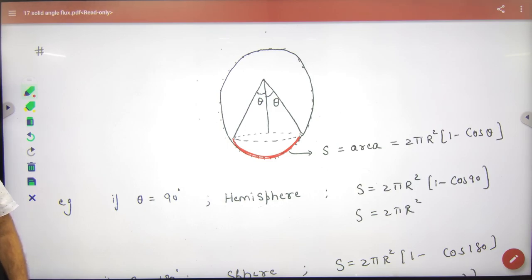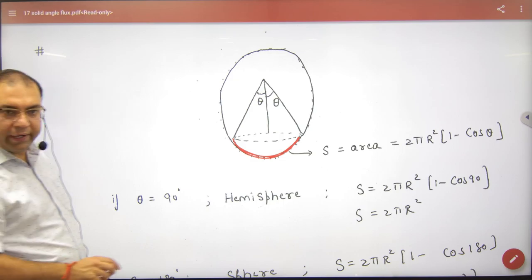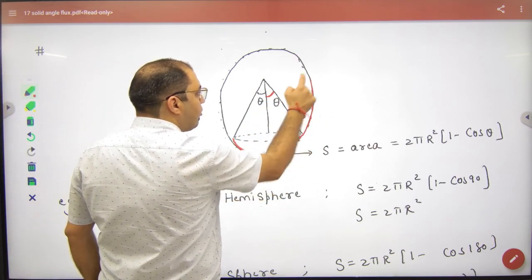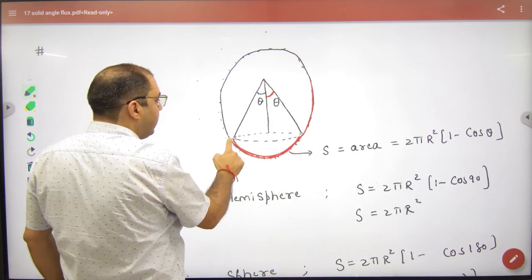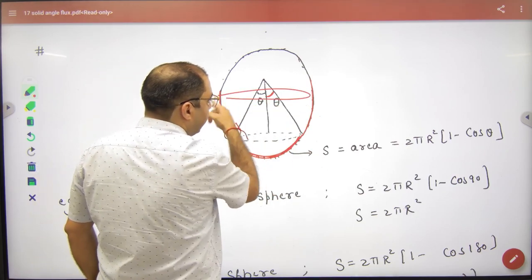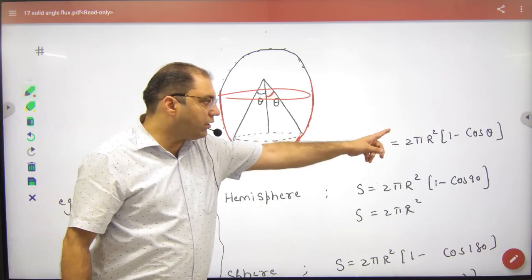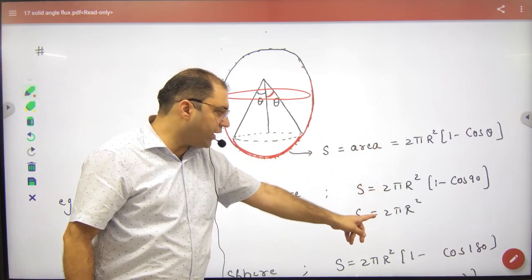For example, if θ is 90 degrees, it will reach this point here. What will the figure be? A hemisphere. So if you put θ = 90° in this formula, the surface area will be 2πr². That's correct.